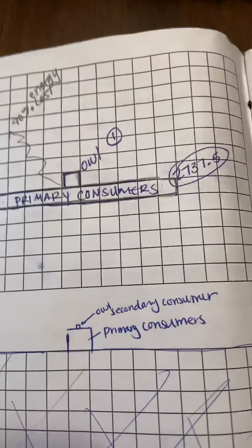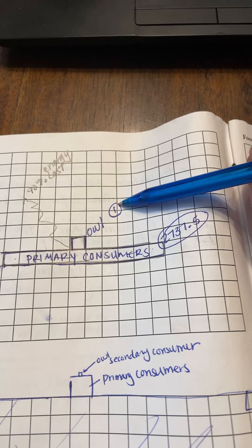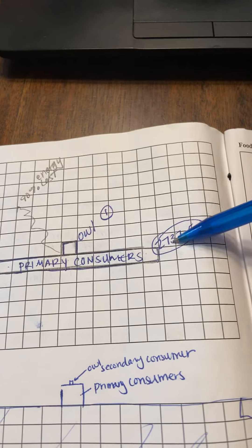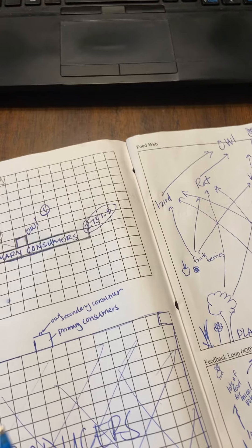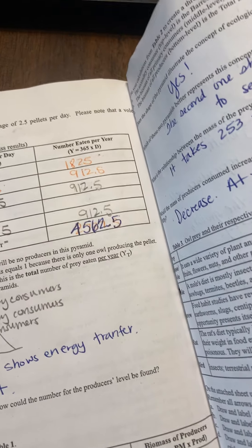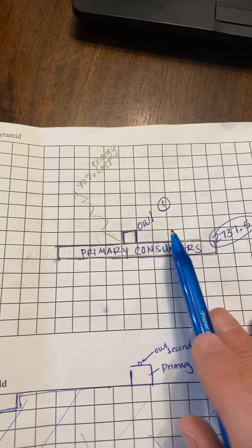Let me show you what I did here. Again, this will be on the pictures. There's only one owl, and there were — I changed the number — really 4,562 of the primary consumers.